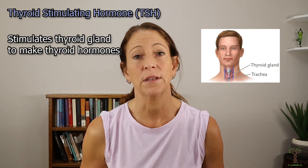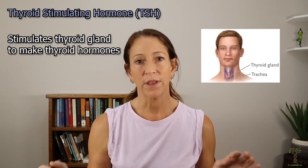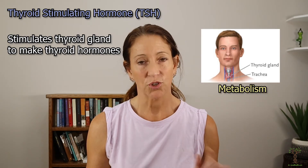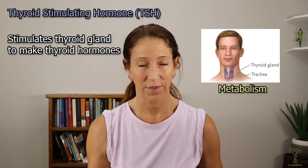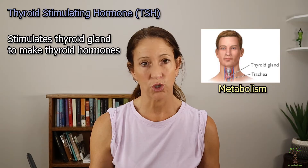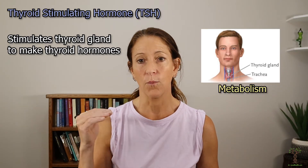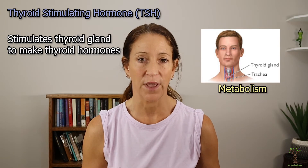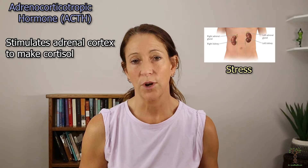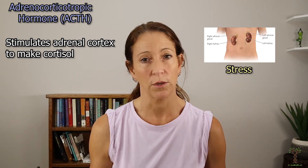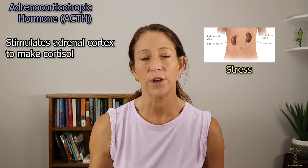Thyroid stimulating hormone stimulates the thyroid gland, which plays a major role in metabolism. We need thyroid hormone production whenever we need energy — such as during acute stress responses or exercise. Adrenocorticotropic hormone affects the adrenal gland, which plays an important role in stress. When we have a stress response we need cortisol, which is the main hormone produced by the adrenal cortex.